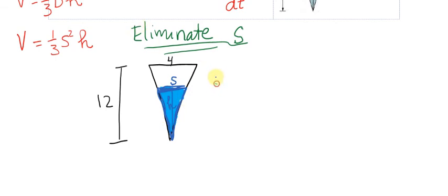So we can use our similar triangles to write a nice helpful little function to help us eliminate s. We know that s over 4 is equal to h over 12, so that means s is equal to 4 times h over 12, in other words 1/3 h.